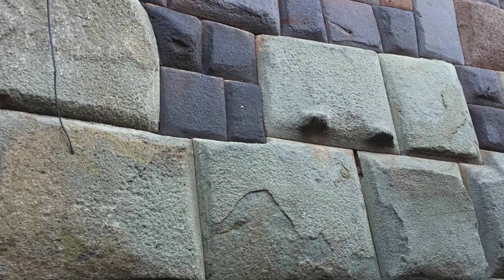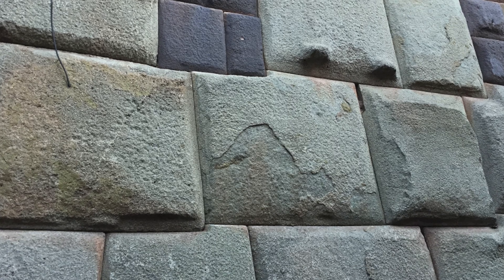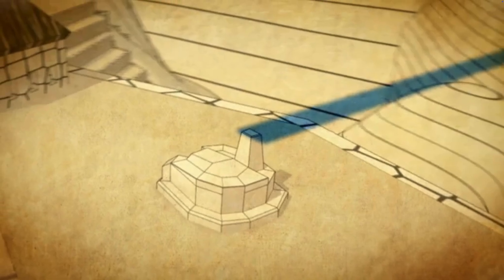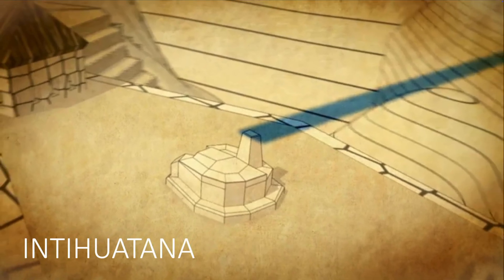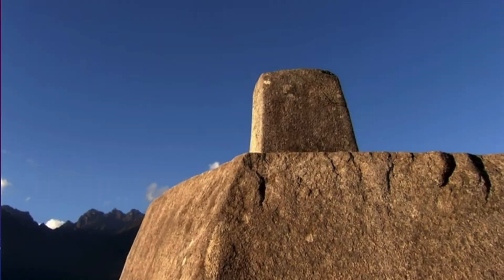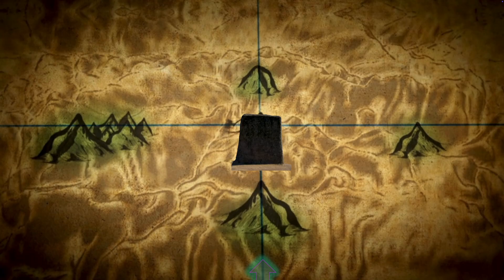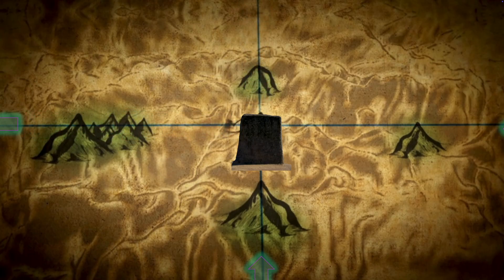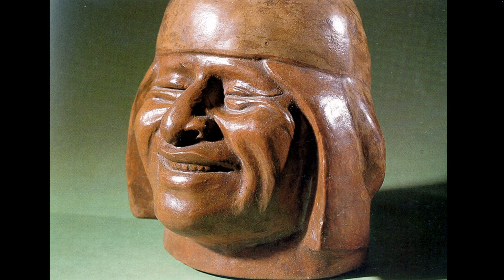At the top of Machu Picchu is a sacred pillar known as the Intihuatana, aligned with four mountain gods and situated at the center of four mountains and the four cardinal points. But we're out of time — that's it, thanks so much for watching.